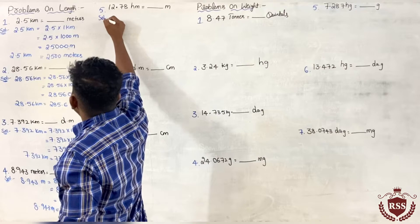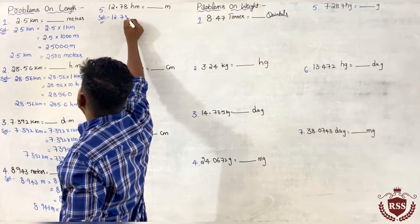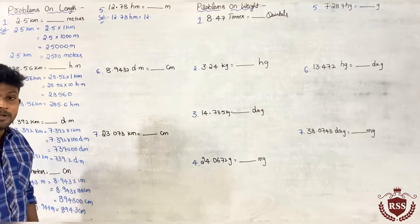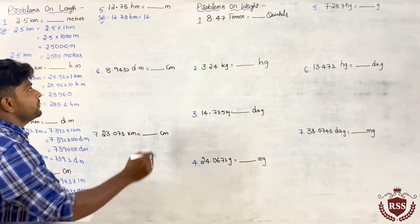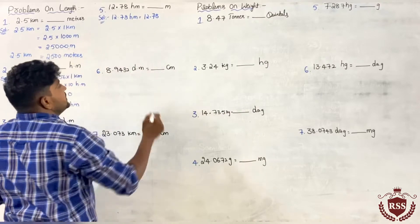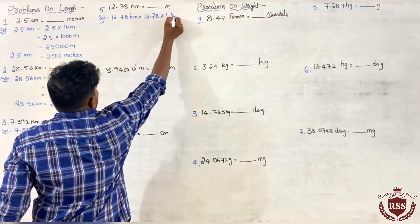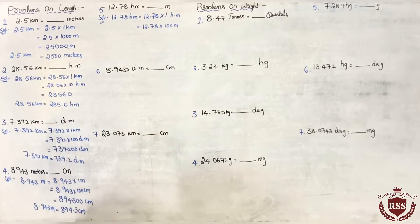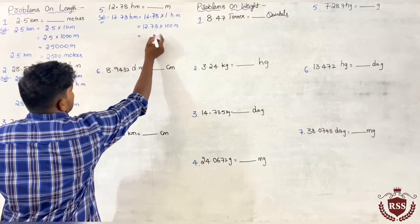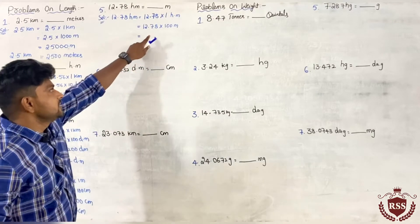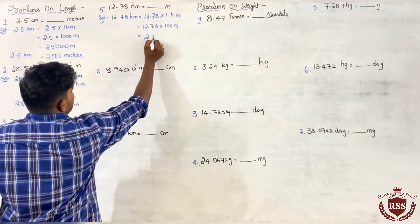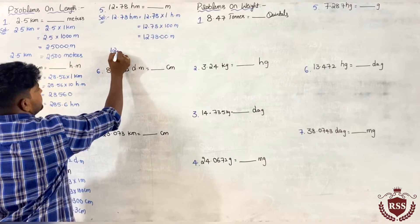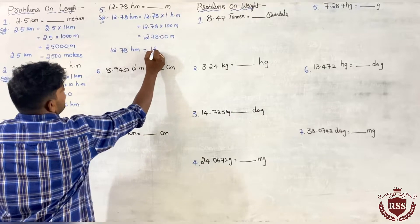Next: 12.78 hectometers. 1 hectometer equals how many meters? 1 hectometer equals 100 meters. So 12.78 into 1 hectometer equals 12.78 into 100 meters. We have equal number of decimal values and zeros, so we can remove the decimal point. The result is 1278 meters, which equals 12.78 hectometers.